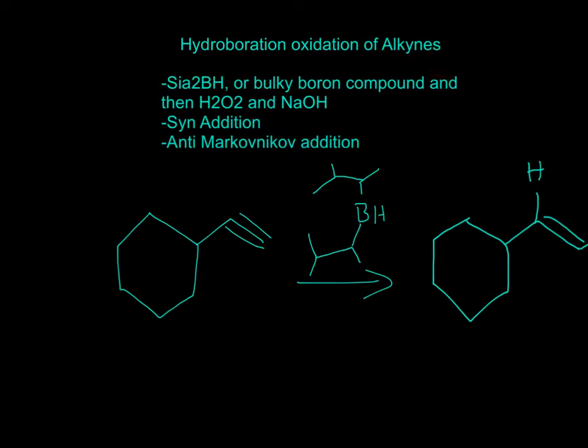For hydroboration oxidation of alkynes, you'll need Ca2BH or a bulky boron compound, and then H2O2 and NaOH. So it'll be syn addition and anti-Markovnikov addition.